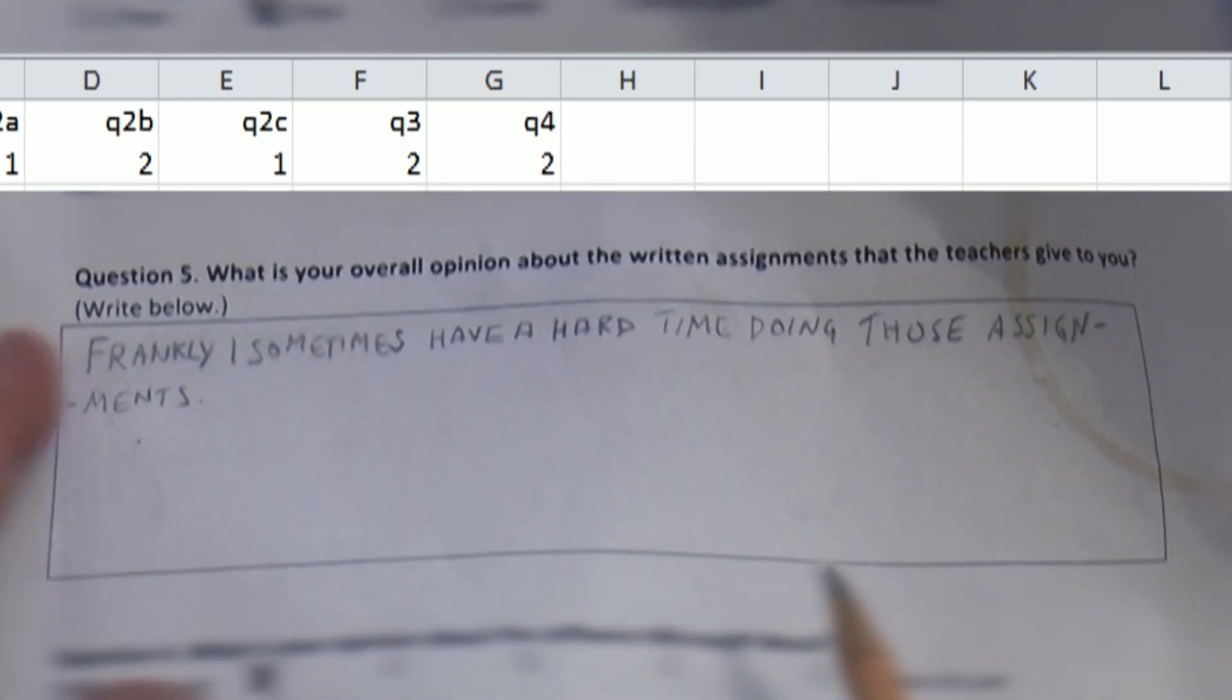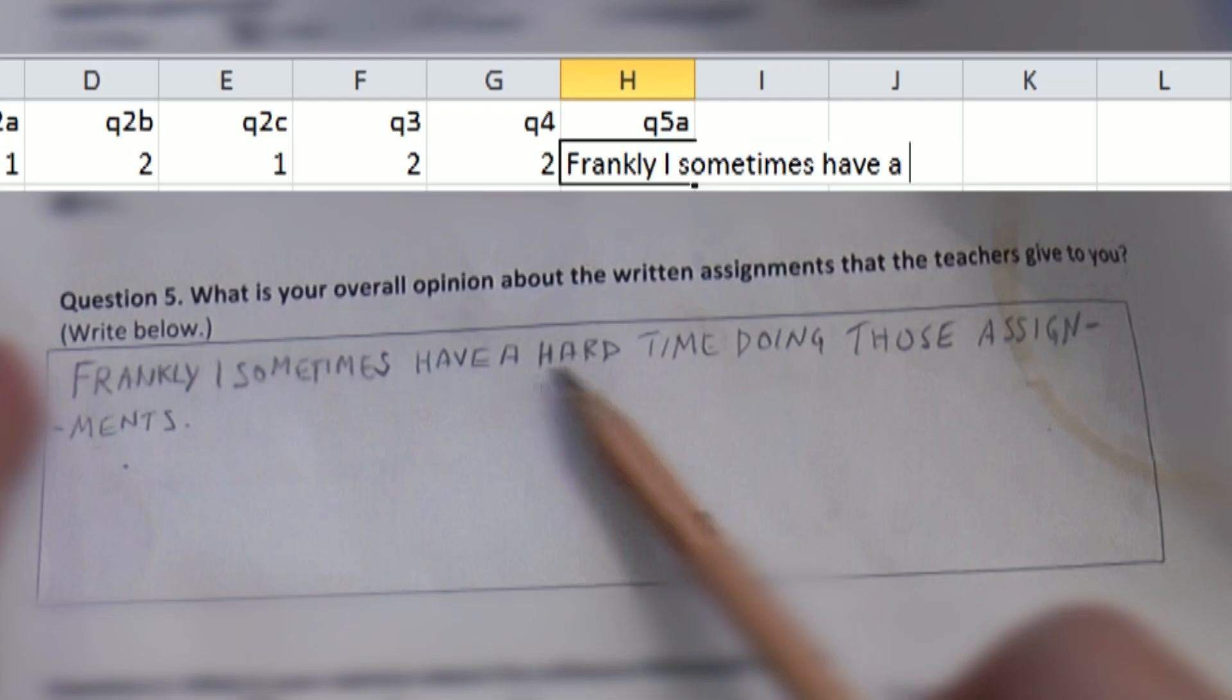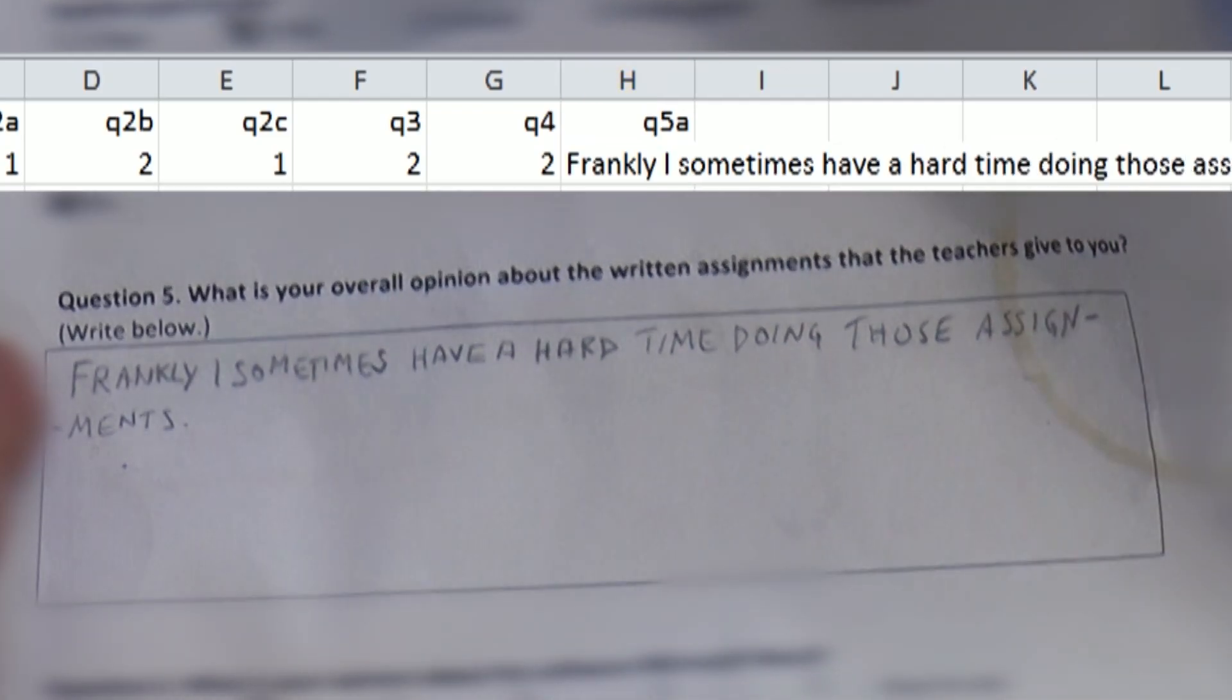Question 5 is an open question and in Excel I usually need two columns for this to work. First in column Q5A I type in the written reply from each respondent verbatim. In the next column Q5B I will later categorize the responses, that is, interpret and code the responses with digits. I talk more about this in another of my tutorial videos.